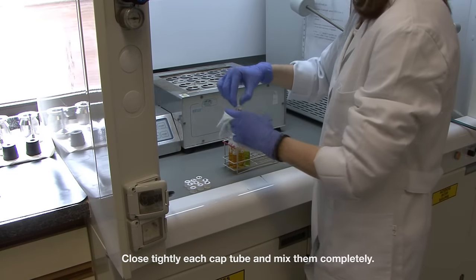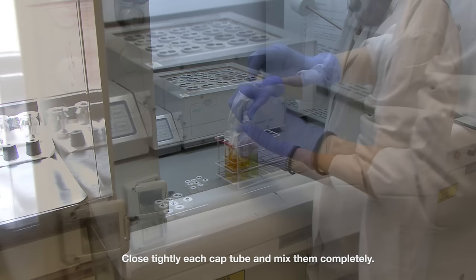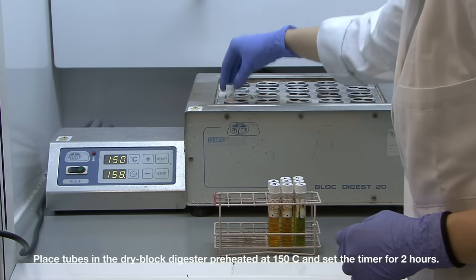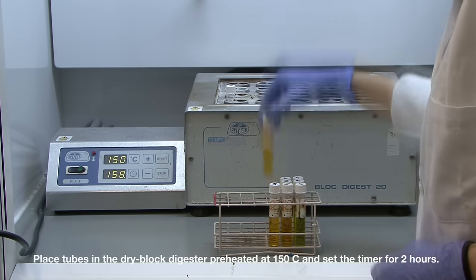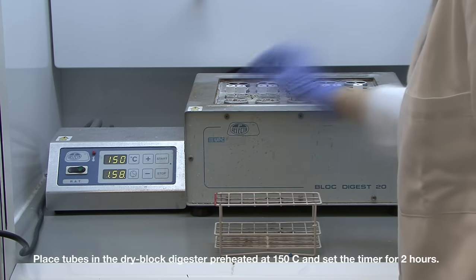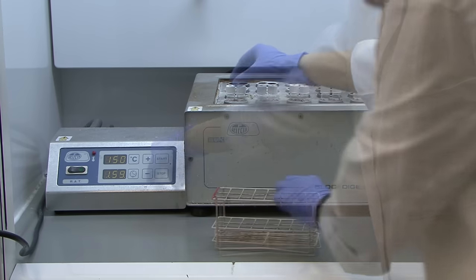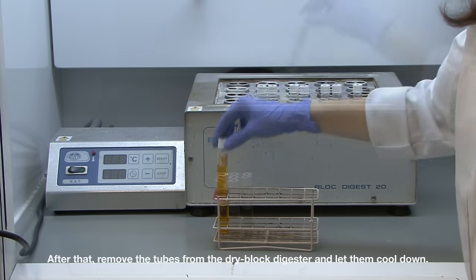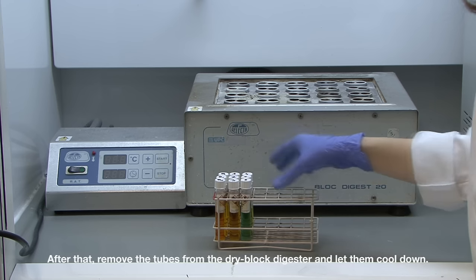Close tightly each capped tube and mix them completely. Place tubes in the dry block digester preheated at 150 degrees Celsius and set the timer for 2 hours. After that, remove the tubes from the dry block digester and let them cool down.